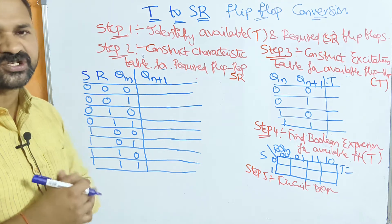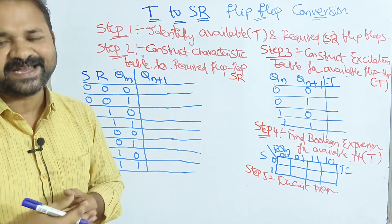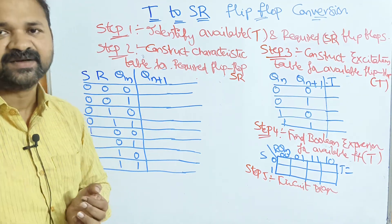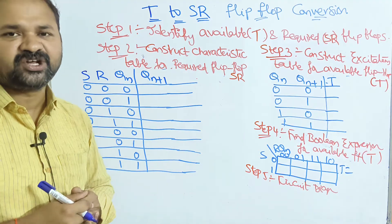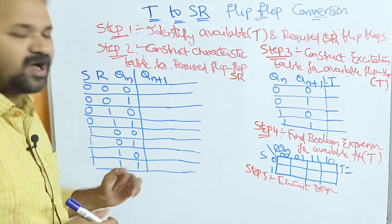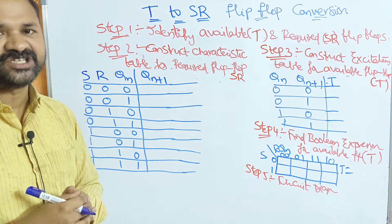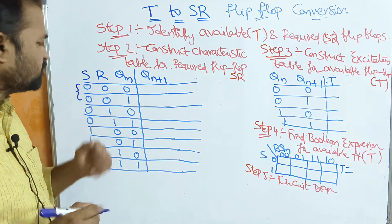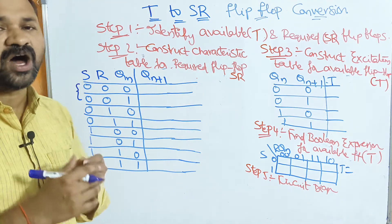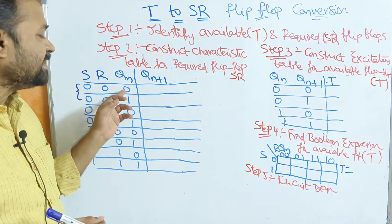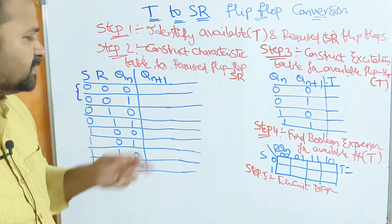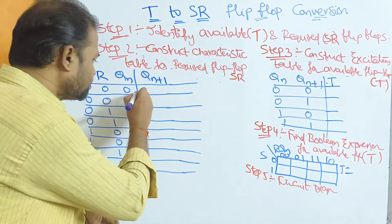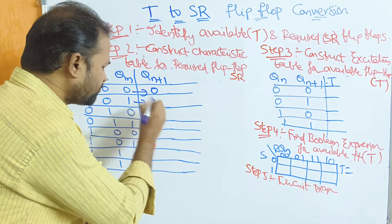With 3 inputs we will have 2³ = 8 combinations, from decimal 0 (binary 000) to all 1s (binary 111). In the first 2 cases, S and R values are 0 0. If S=0 and R=0, there is no change in the current state output. So the next state output is the same as the current state output: 0 remains 0, and 1 remains 1.